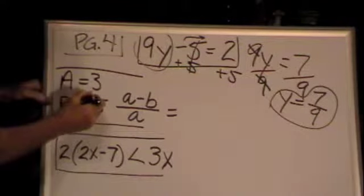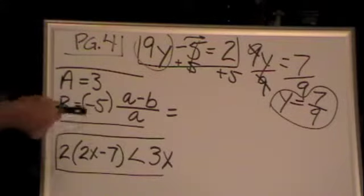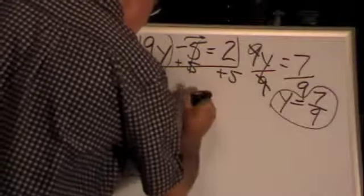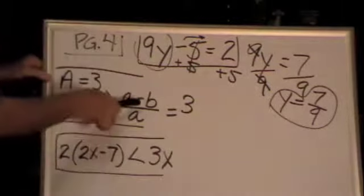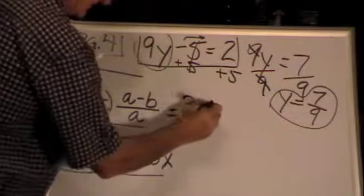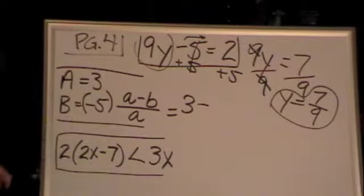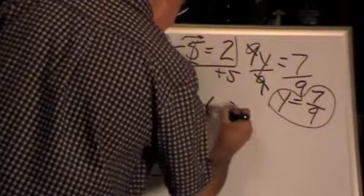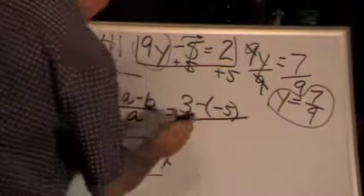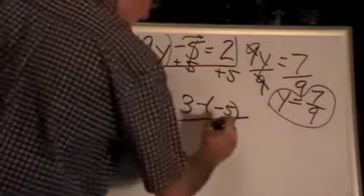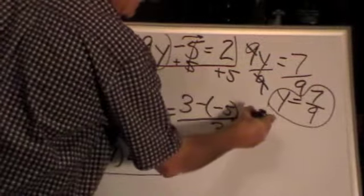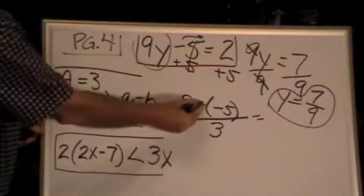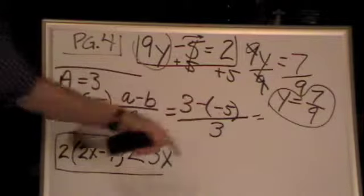Whenever you encounter that, insert that as the equation. Fill it in. The a value, 3. What's the side? Negative. What's the next value? Negative 5 inside of parenthesis, and the bottom value, that's right, 3. Do you see how easy that makes it when using the parenthesis?